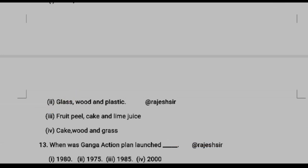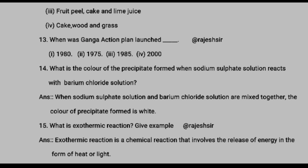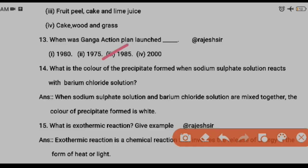Question thirteen: when was the Ganga Action Plan launched? In your textbook it is mentioned as 1985, so mark 1985. However, if you search on Google it shows 1986 — there is a contradiction. Follow the book: the answer is 1985.